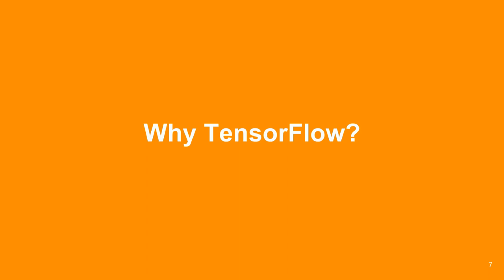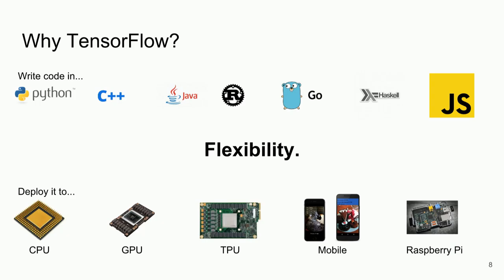Why should you invest in picking up TensorFlow when you're comfortable solving problems with scikit-learn? The first reason is flexibility. You can use TensorFlow bindings in many different languages and deploy your graphs to a variety of computational resources — whether that's a CPU, GPU, TPU, mobile, or even a Raspberry Pi. TensorFlow.js was just announced at the TensorFlow Developer Summit two weeks ago, making it incredibly flexible and approachable.